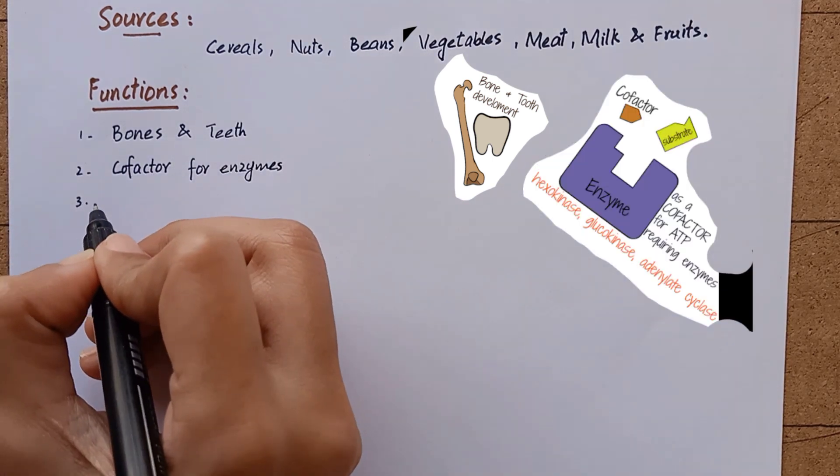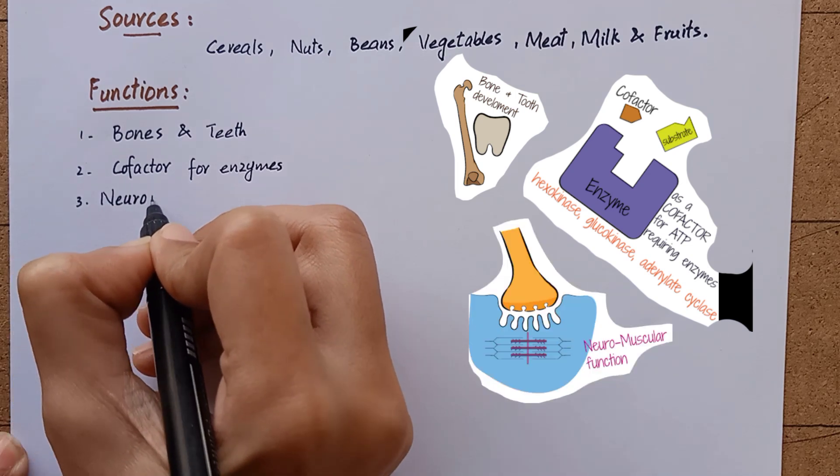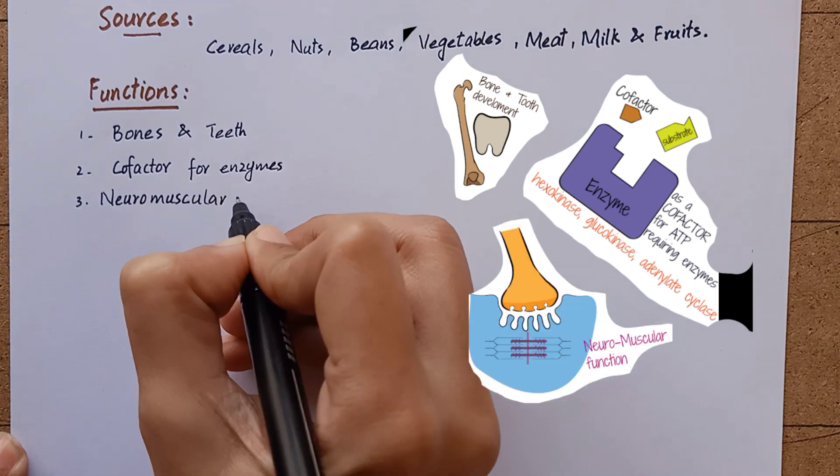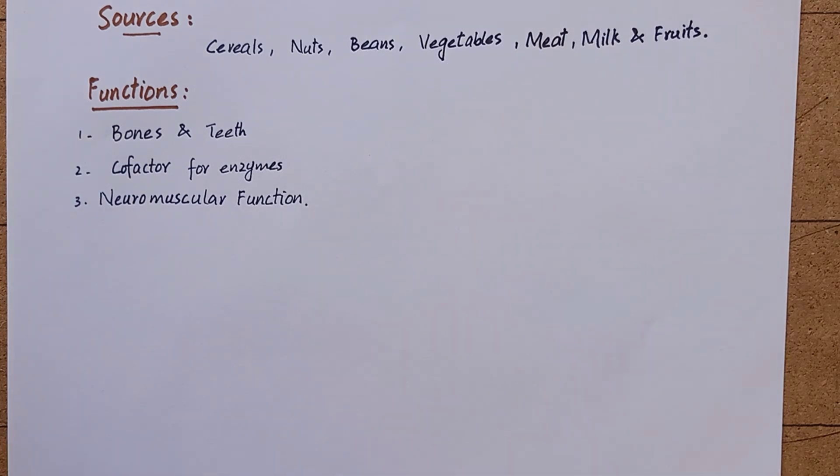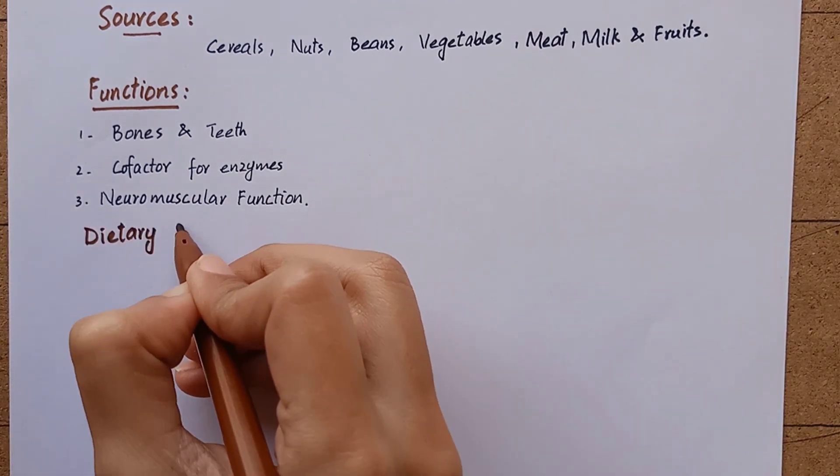Magnesium is necessary for proper neuromuscular functions because low magnesium levels lead to neuromuscular irritability.